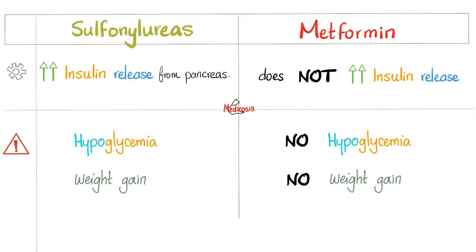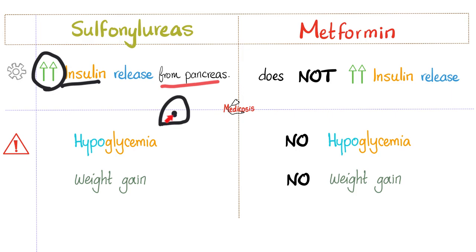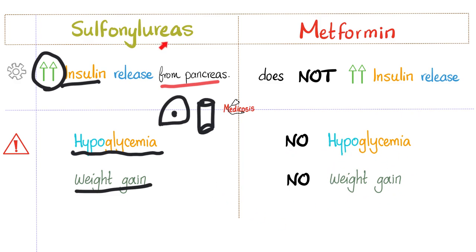Here is a quick comparison between sulfonylureas and metformin. Sulfonylureas are insulin secretagogues — they tend to secrete more insulin from the pancreatic beta cells — whereas metformin, chemically a biguanide, is not an insulin secretagogue and is not going to increase insulin release from the pancreas. If you increase insulin release from the pancreas, insulin is going to push glucose into the cells, especially adipose tissue, so there will be more glucose and free fatty acids available in the adipose tissue and I will gain weight. But with metformin, since I am not boosting insulin release from the pancreas, hypoglycemia is less likely and weight gain is less likely compared to the sulfonylureas.